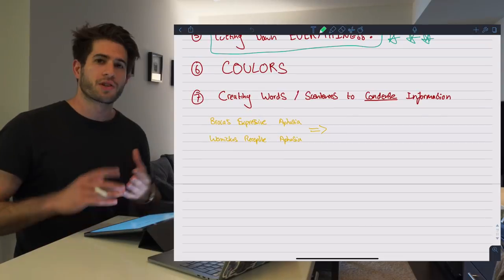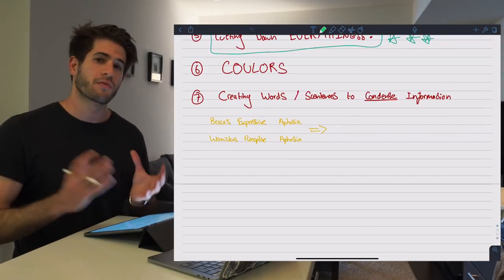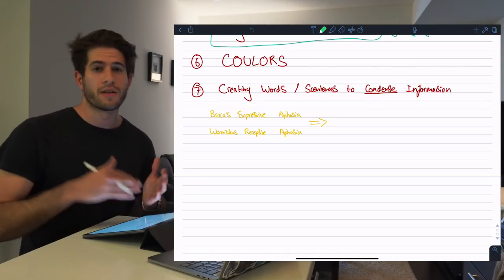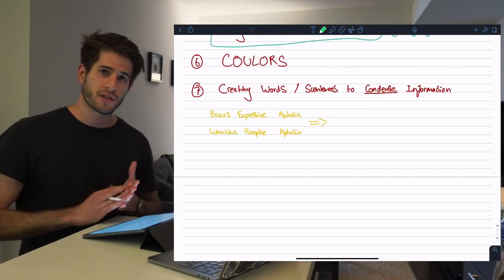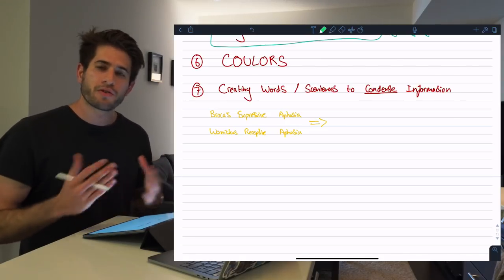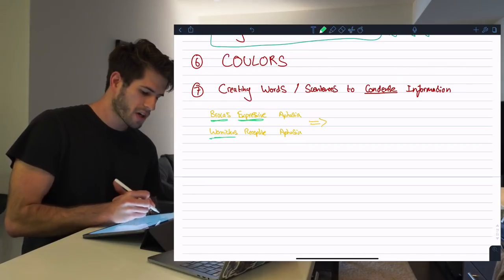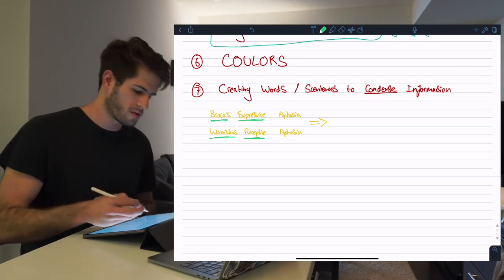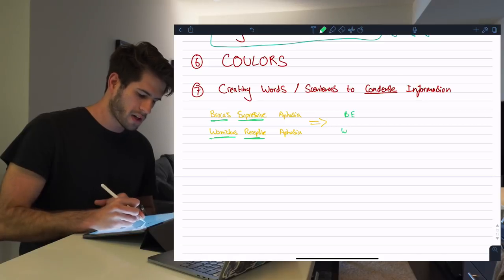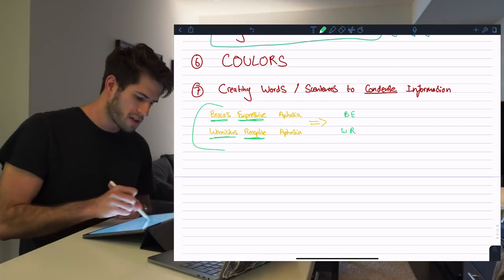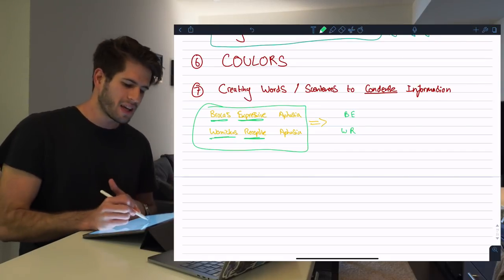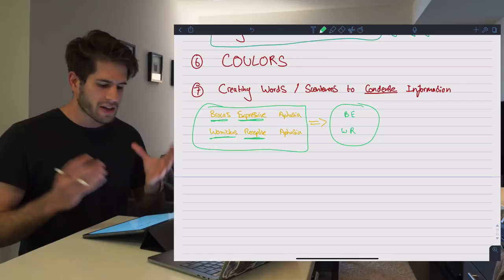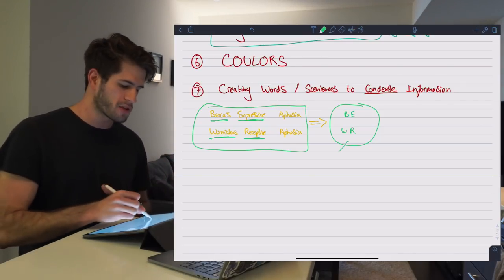Moving back to that random document, our last tip which I think is very important is creating words or sentences in order to condense and remember information. A very good example of how I used this in my most recent test was for remembering that damage to Broca's area in the brain results in an expressive aphasia and damage to Wernicke's area causes a receptive aphasia. Here are the two relationships I needed to remember: Broca's and expressive, Wernicke's and receptive. The first thing I do is cut down all those words into just two letters. BE is so much simpler and easier than Broca's expressive. The next thing I want to do is take a look at these words and think about how I can combine them into something easy and simple to remember. What I ended up coming up with was the word beware.